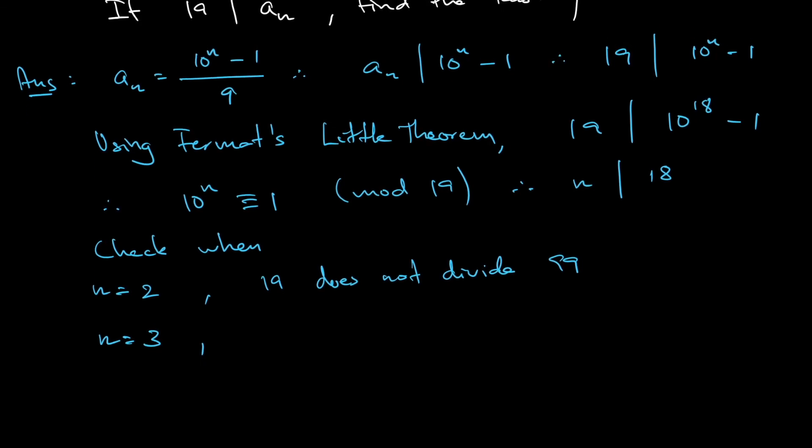Can n be 3? Check this condition, which is the same thing as checking 10^3 mod 19. In fact, you can check 1000 divided by 19, the remainder is actually 12, not 1, so not true.